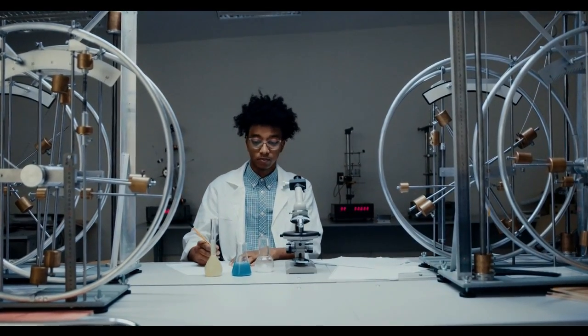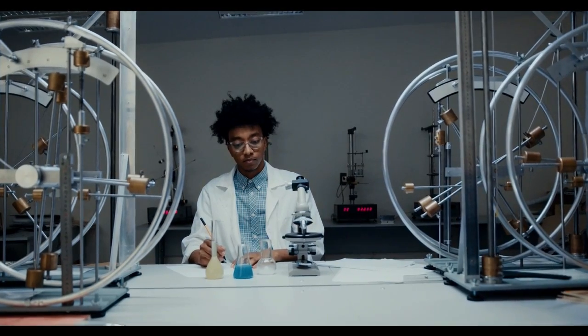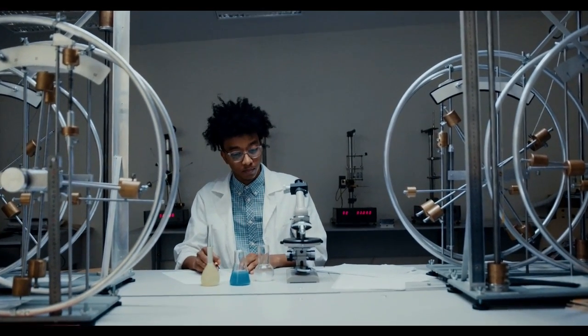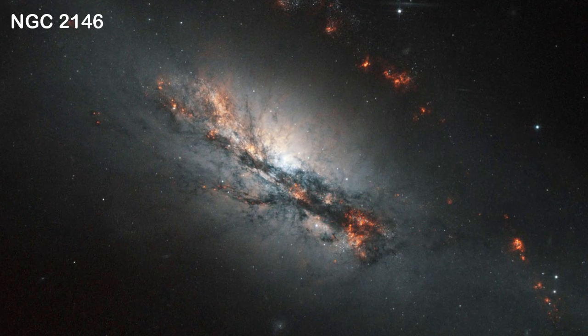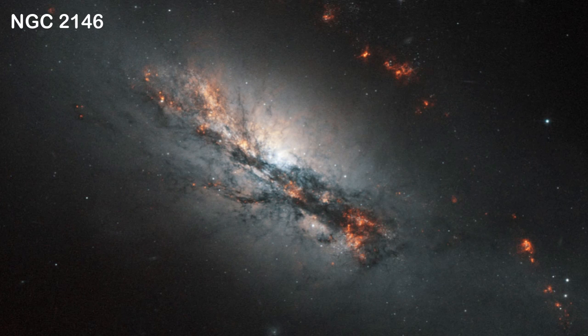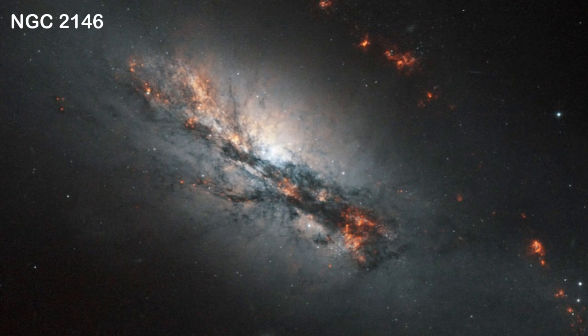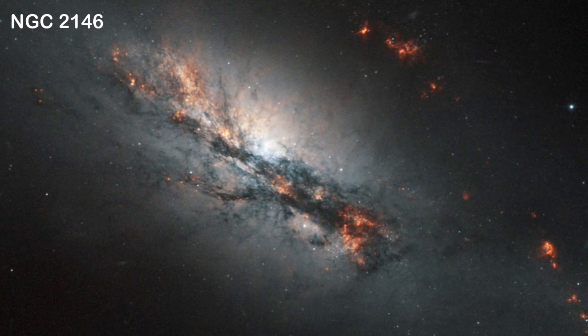Scientists believed these were the only two ways a supernova could occur. However, now an international team of scientists from UC Santa Barbara has discovered a new type of supernova at a distance of 31 million light-years, in the galaxy NGC 2146, using the Los Cumbres Observatory. This new type of stellar explosion is called an electron-capture supernova.